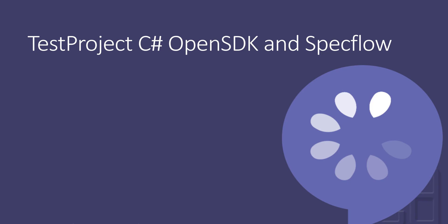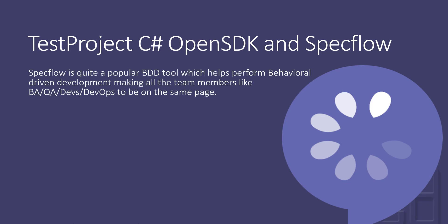That is one of the major benefits of having TestProject C# OpenSDK with SpecFlow. SpecFlow is a quite popular BDD tool which helps perform behavior-driven development, making all team members — BA, QA, Devs, DevOps — be on the same page. We already know SpecFlow is an amazing tool; it's the Cucumber for the .NET world. We are not really going to talk about SpecFlow itself, but we will see how the power of SpecFlow can be used within our existing codebase with the help of TestProject's OpenSDK.